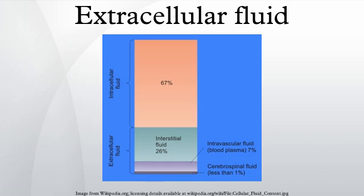Extracellular fluid, or extracellular fluid volume, usually denotes all body fluid outside of the cells. The remainder is called intracellular fluid. In some animals, including mammals, the extracellular fluid can be divided into two major sub-compartments: interstitial fluid and blood plasma.